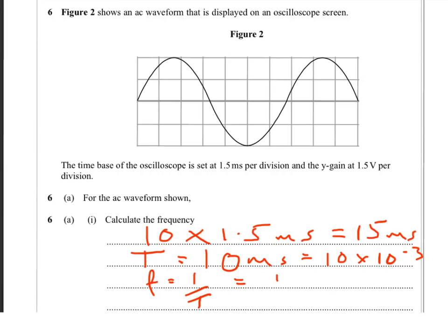Okay, so the frequency is 1 over 10 times 10 to the minus 3. Which equals 100 hertz. Okay, so 3 marks. 1 for using the whole cycle. 1 for getting the period from that. And then the third mark for getting the frequency.